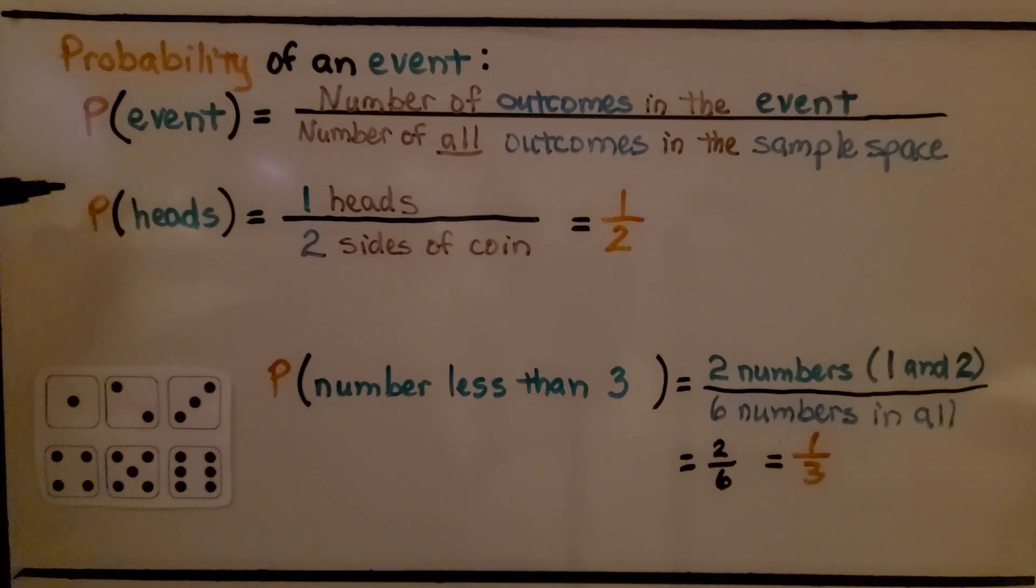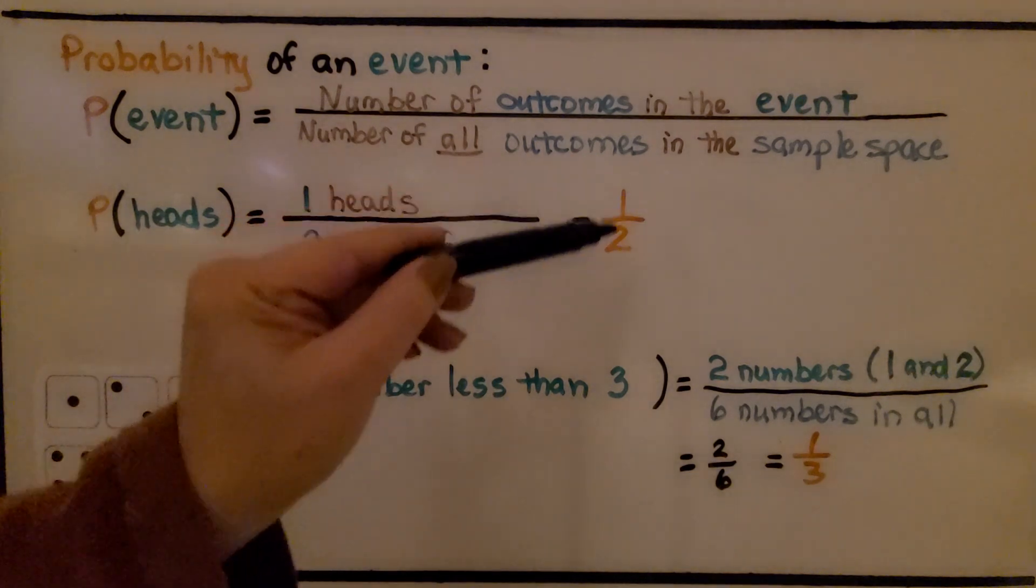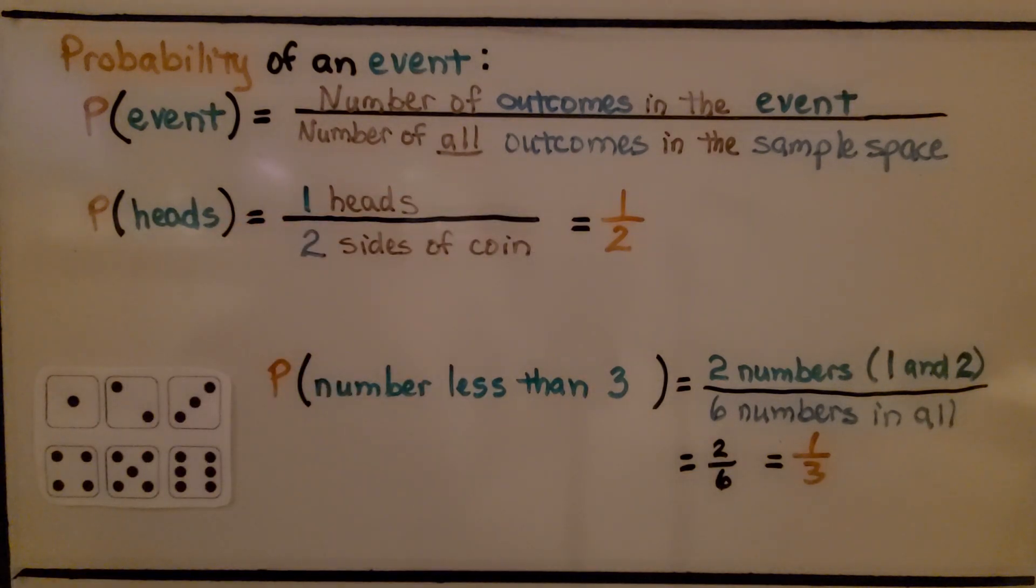For a coin, we would have heads or tails, the probability of getting heads. Well, there's one heads and there's two sides of a coin. We'd have one half for the probability of getting heads. It's a one out of two chance.